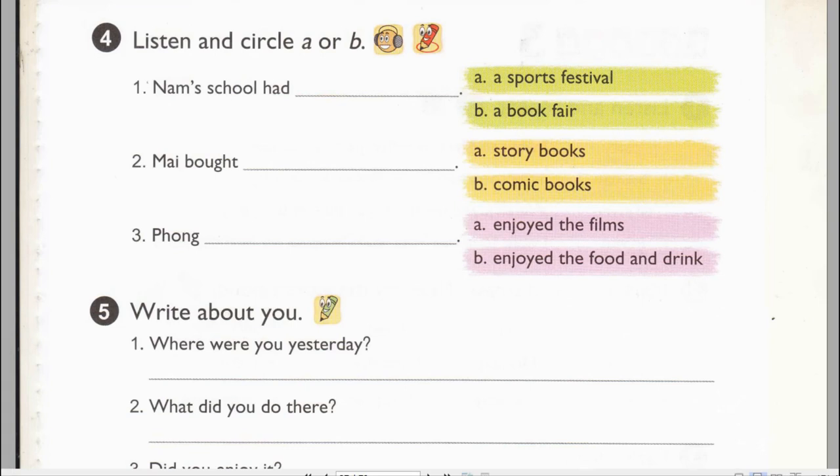Page 27, Activity 4. Listen and circle A or B. 1. Where were you yesterday, Nam? I was at school. What did you do there? We had a sports festival.